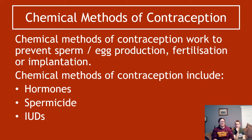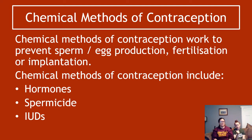In terms of the chemical methods of contraception, there are a few different ones. It's all about preventing the production of sperm or ova, preventing fertilisation, or preventing implantation happening. The ones we're going to talk about are hormones, spermicide, and IUDs — though I've put IUDs under chemical methods while the SQA course documents say it's a physical method.